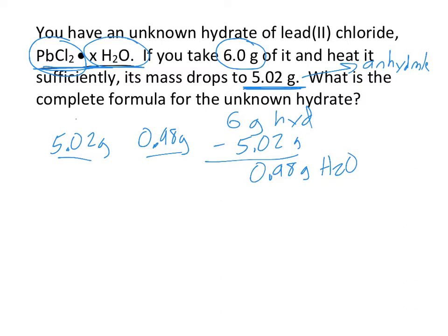So what we do is say, okay, the 5.02 grams all comes from PbCl2. How many moles of PbCl2 is that? So we'll do a quick thing where we find the molar mass. So we've got one Pb, we've got two Cls.